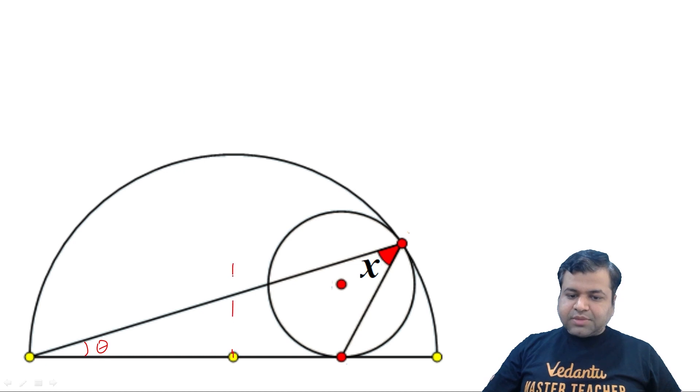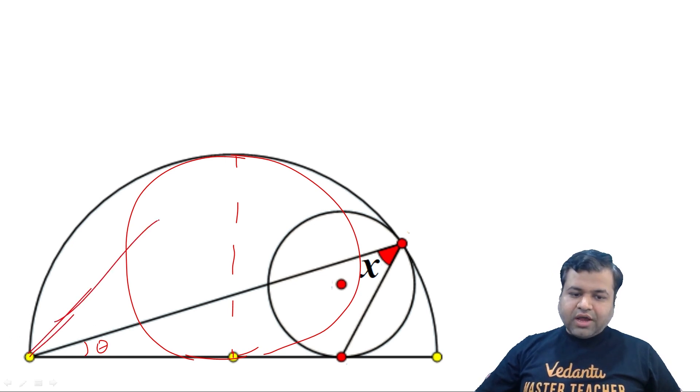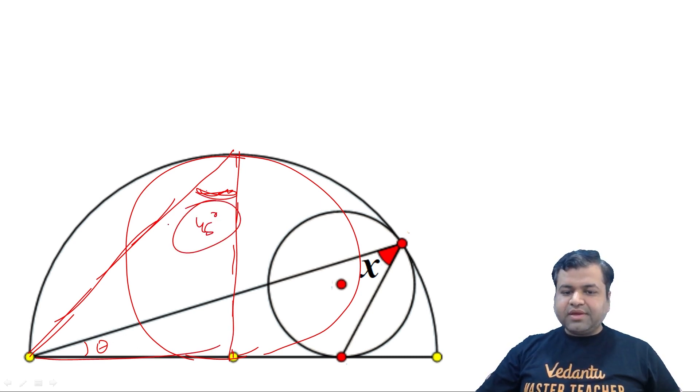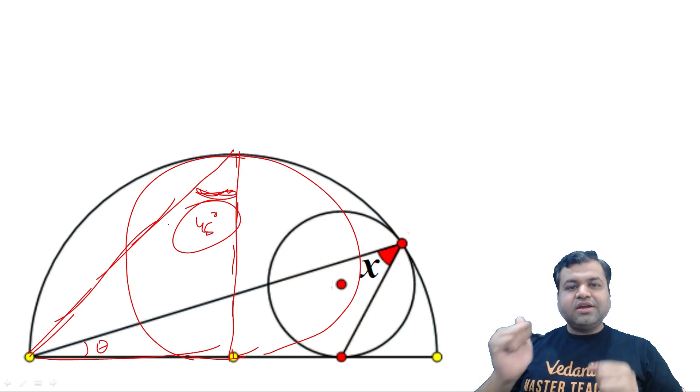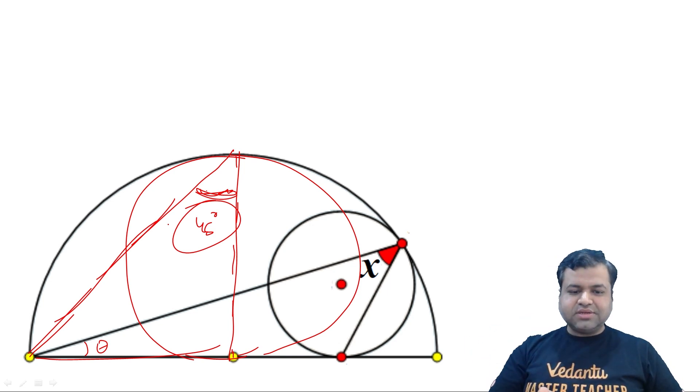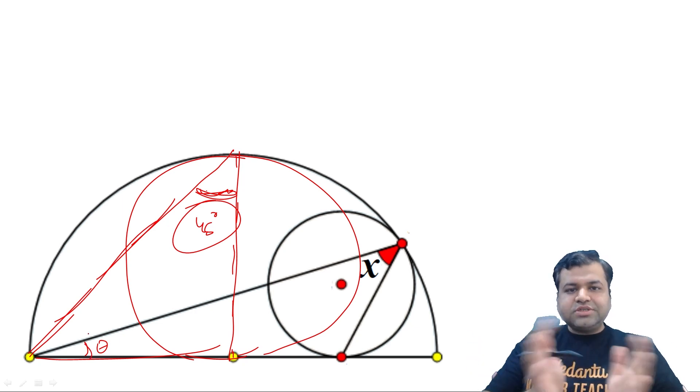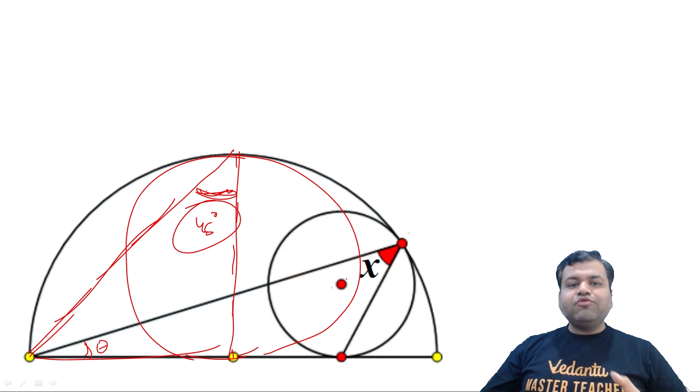So what can we do in this? We can apply a shortcut. Let's say this question comes in the paper. This angle is not dependent on theta. If the question is correct, this should be independent of theta. This angle should remain the same. So what I will do? I will accept the biggest circle. I mean, I will accept this circle. So now I want to find this angle. This angle should be 45 degrees.